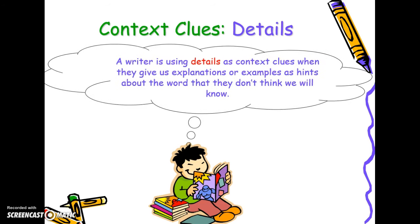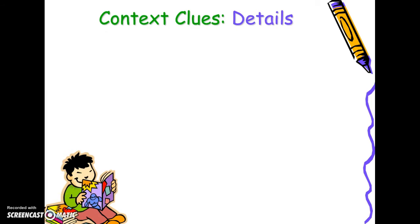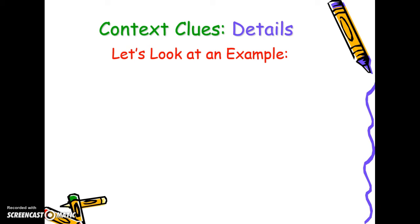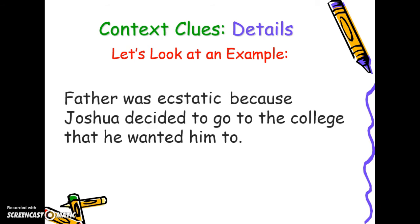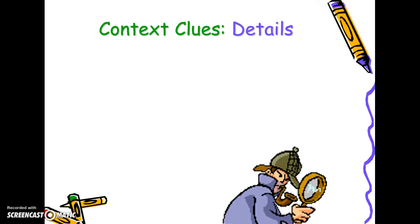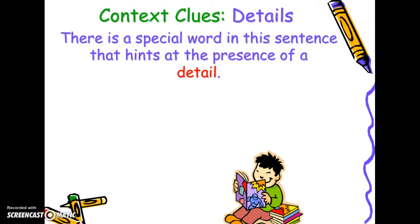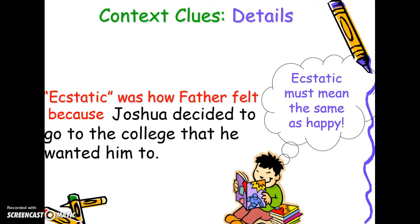Finally, the last way is to find the details that the text provides you. Details can be examples, they can tell why, or they can show relationships — so details tend to be a little more difficult to find. 'Father was ecstatic because Joshua decided to go to the college that he wanted him to.' The word because shows us we're going to find out why he's happy, so ecstatic must mean extremely happy.